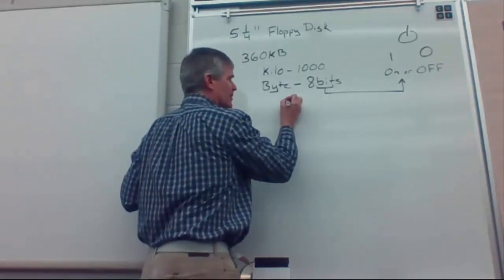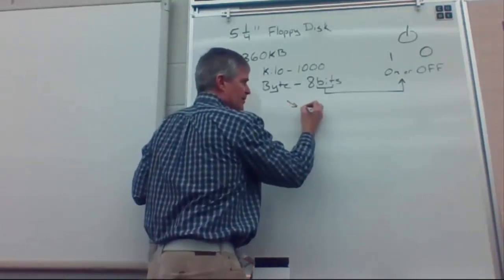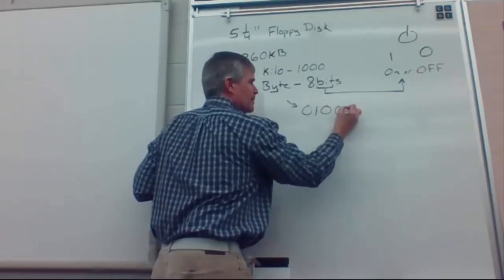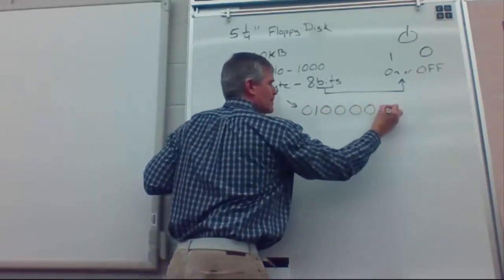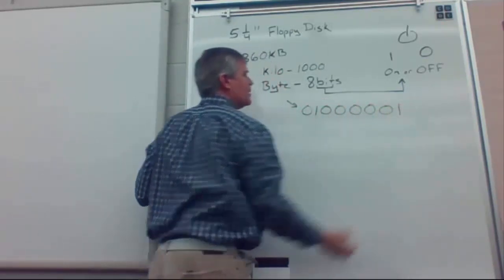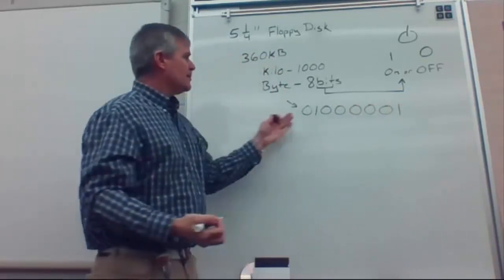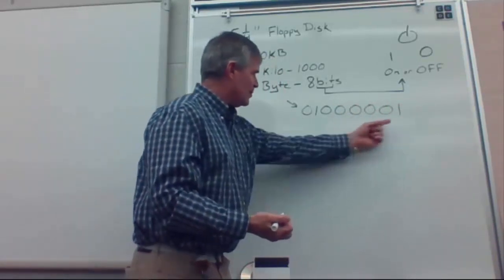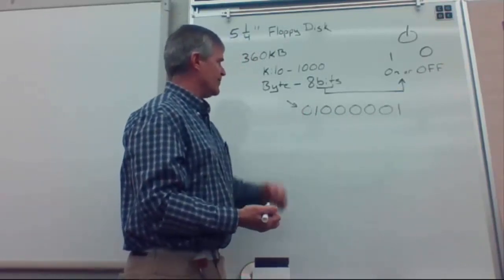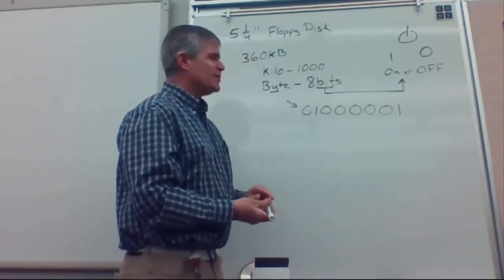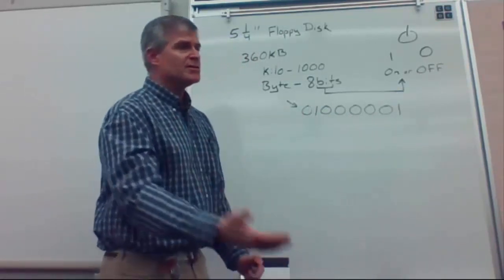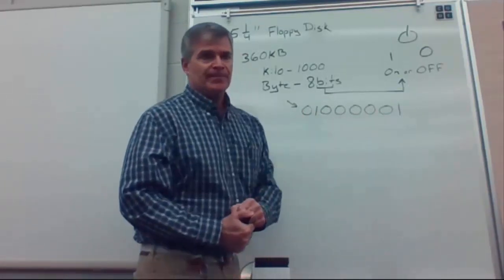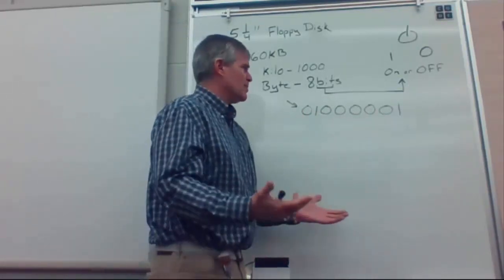So what does a byte look like? A byte is simply going to look like this — there is an example of a byte. We have all these ones and zeros put together, eight of them. If you do a combination of eight ones and zeros, it's going to represent a byte.